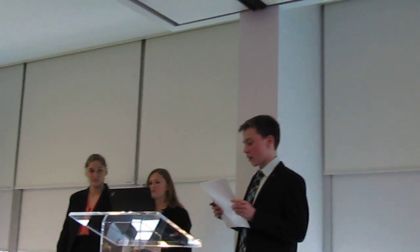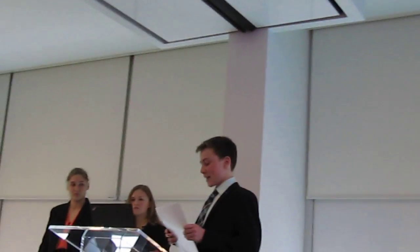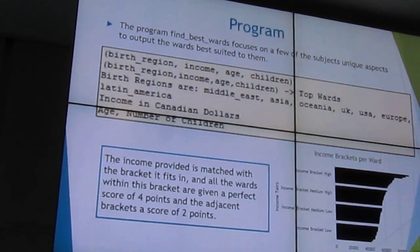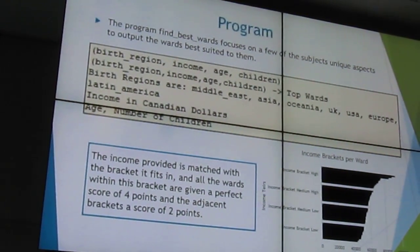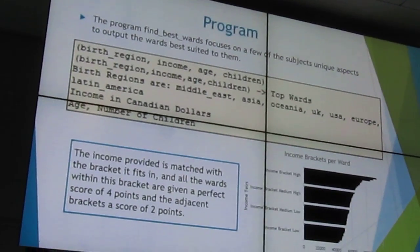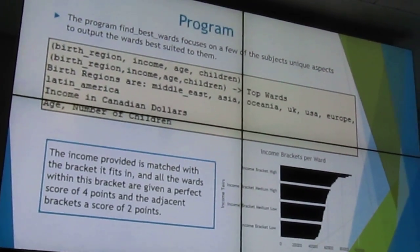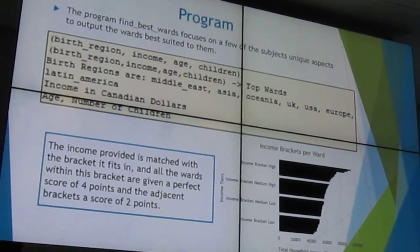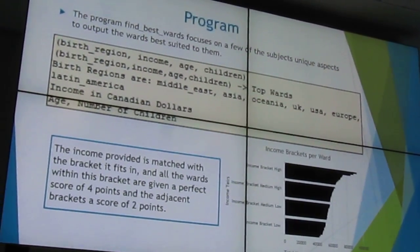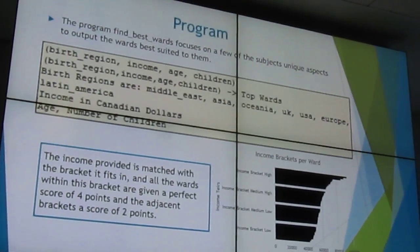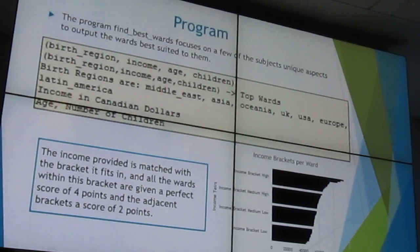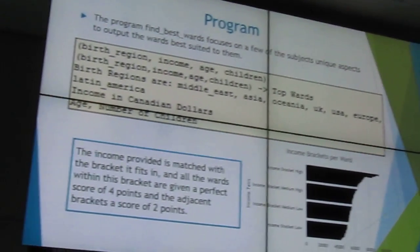We broke down the income per ward into brackets, as the data had very few outliers, making the bracket system a great representation of the data. We determined which bracket the inputted data fell into using greater-than and less-than comparisons. Each ward within the matching bracket received four points, and wards in adjacent brackets received two points. Each bracket was roughly $5,000 apart.